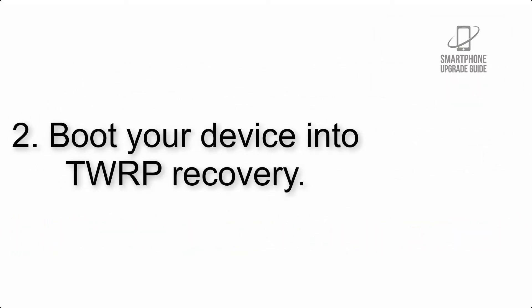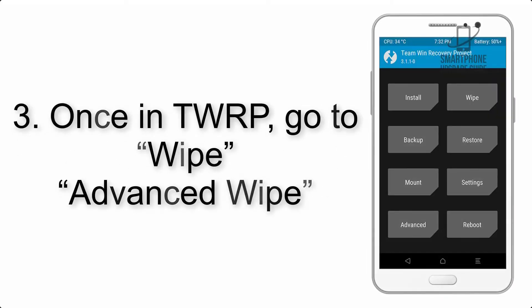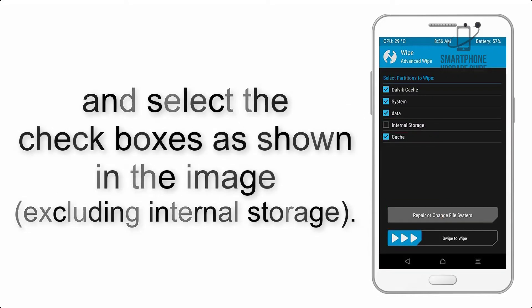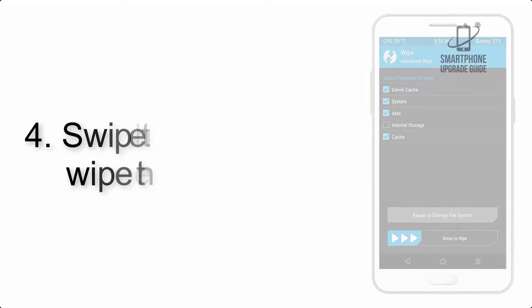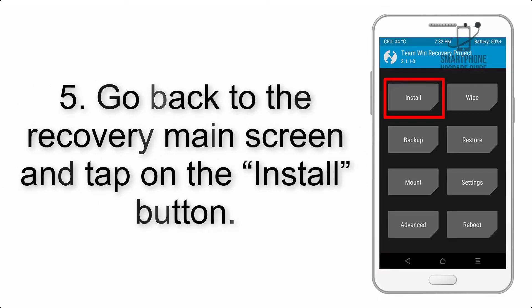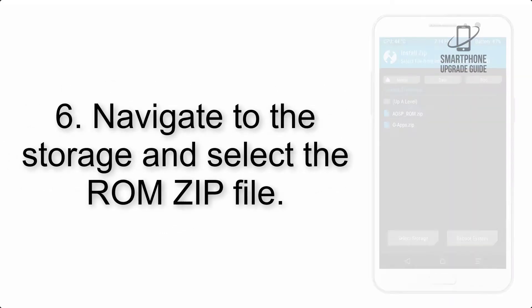Step 2: Boot your device into TWRP recovery. Once in TWRP, click on Wipe Advanced and select the checkboxes as shown in the image, excluding internal storage. Step 4: Swipe the button to wipe the device.